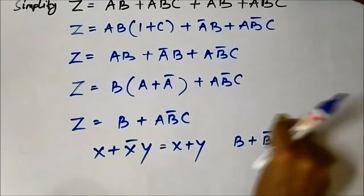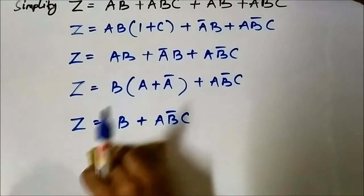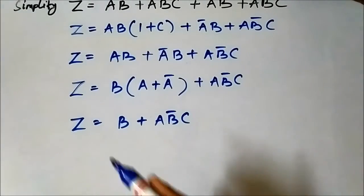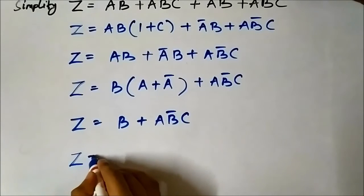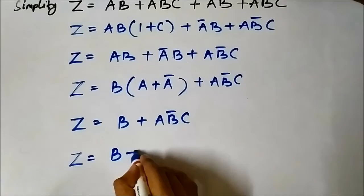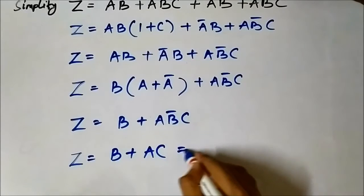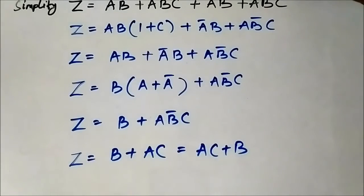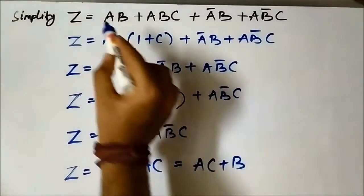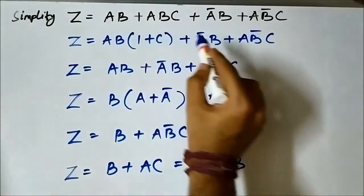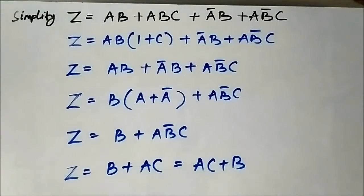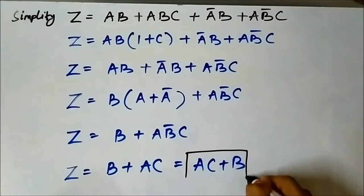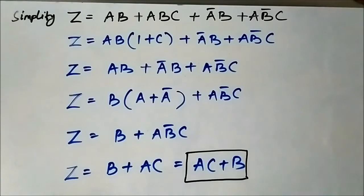So z = b + ac, or written in alphabetical order, ac + b. There is no further simplification possible, so ac + b is the final simplified boolean expression.